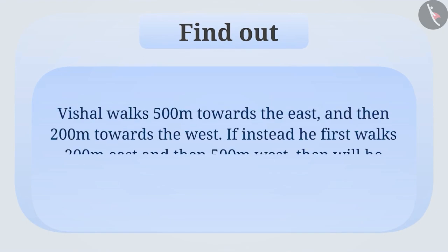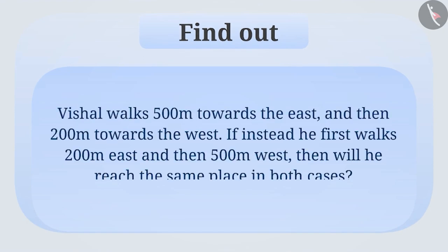Now, try to solve the following question. Vishal walks 500m towards the east and then 200m towards the west. If instead, he first walks 200m east and then 500m west, then will he reach the same place in both cases?